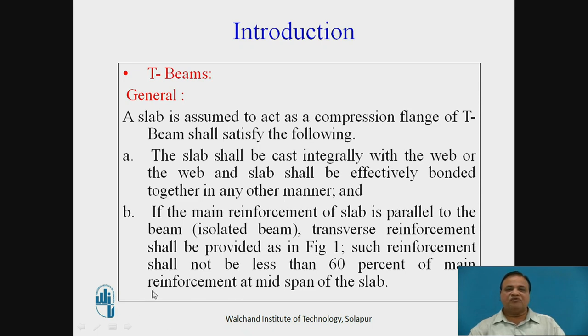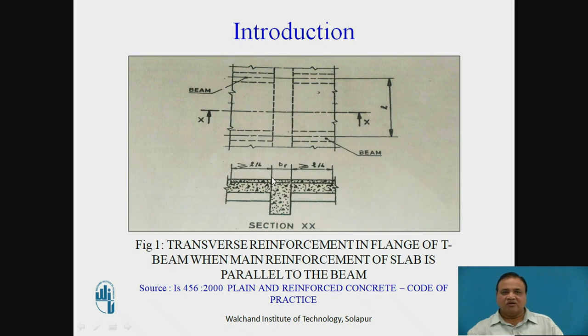So transverse reinforcement shall be provided as shown in figure number 1. Such reinforcement shall not be less than 60% of the main reinforcement at the mid span. So here it is shown. So here you will find this is transverse reinforcement. That means whenever you have secondary beam, so this problem arises. The transverse reinforcement provided across should be 60% of the main reinforcement which we have provided.